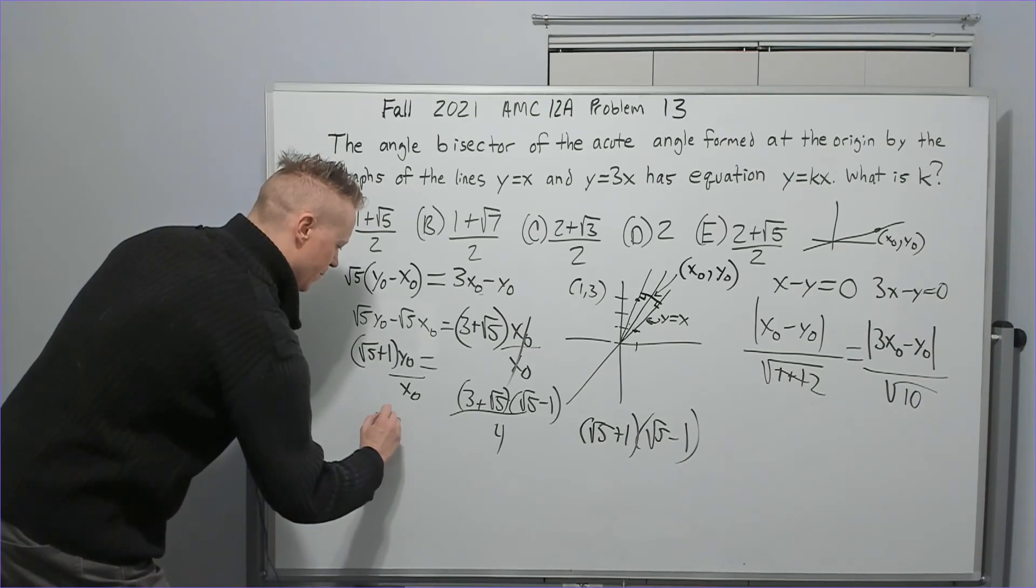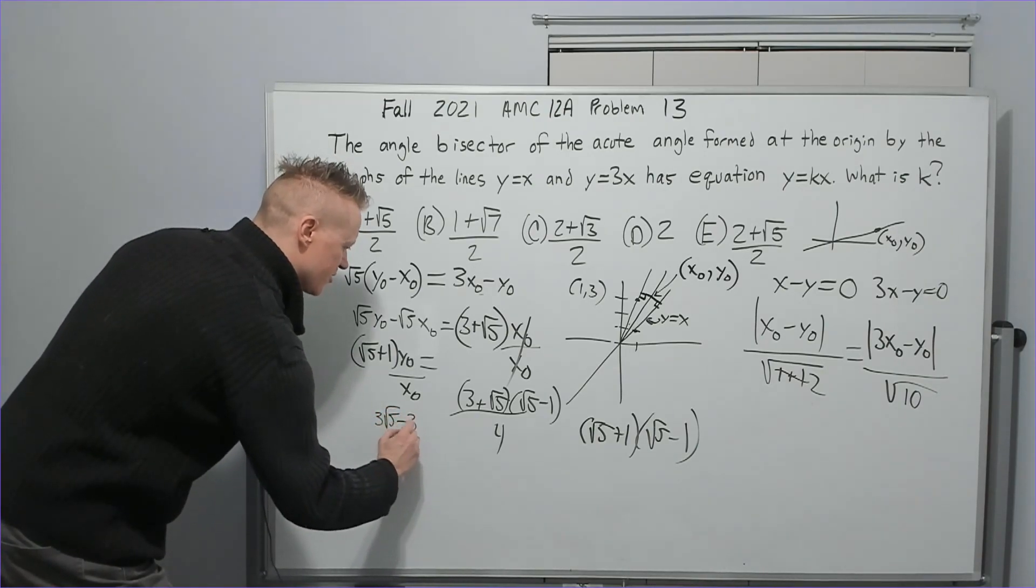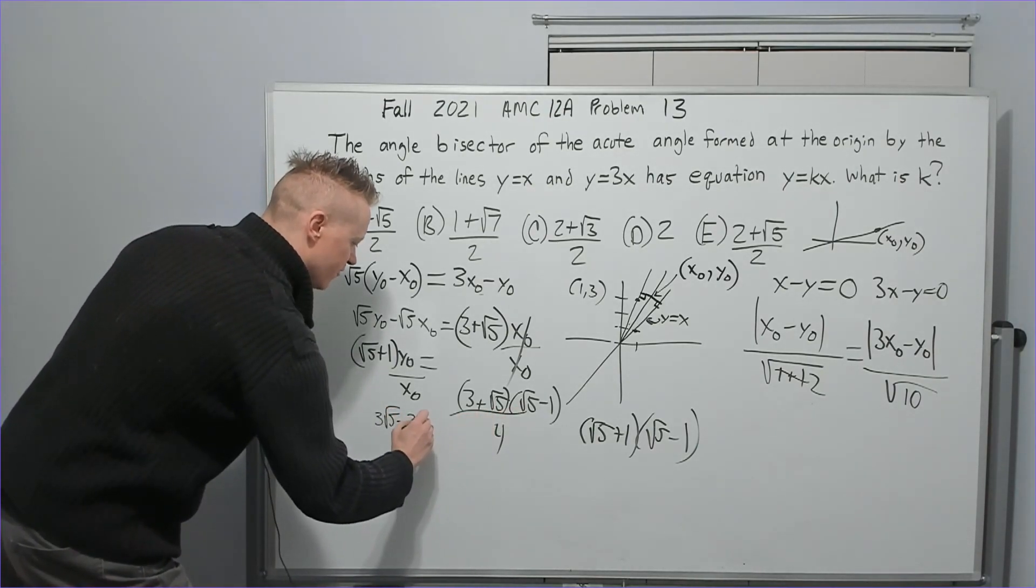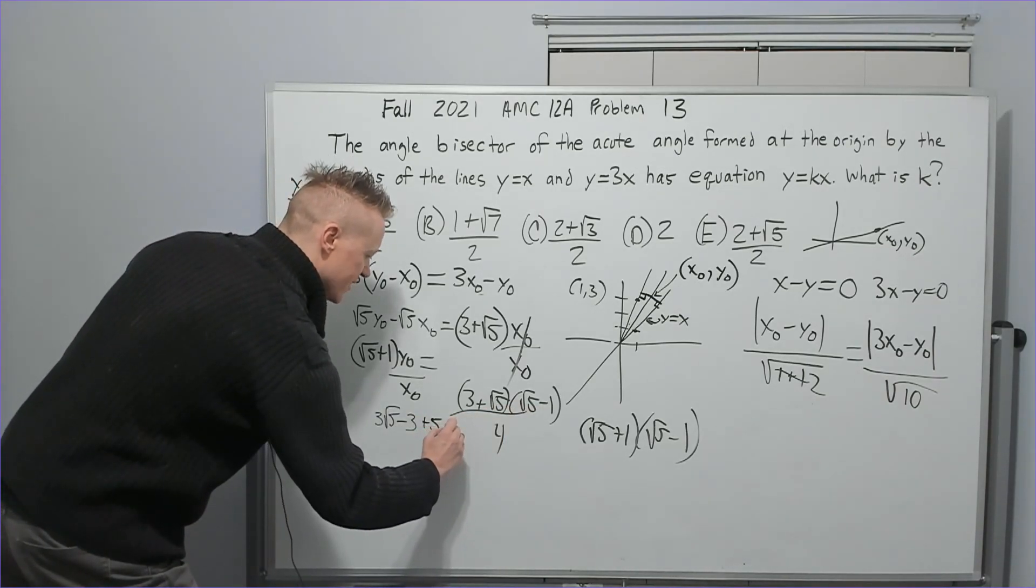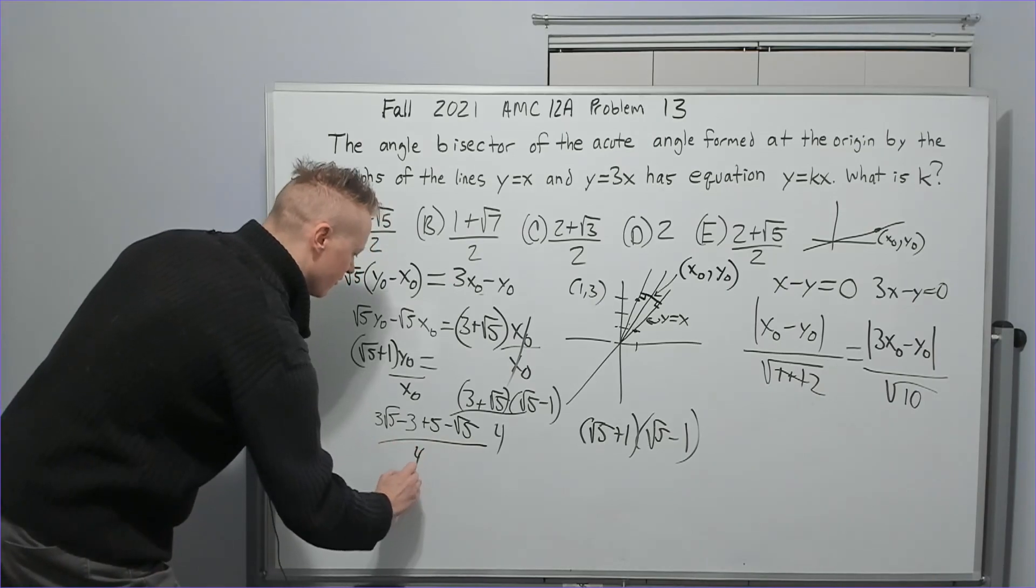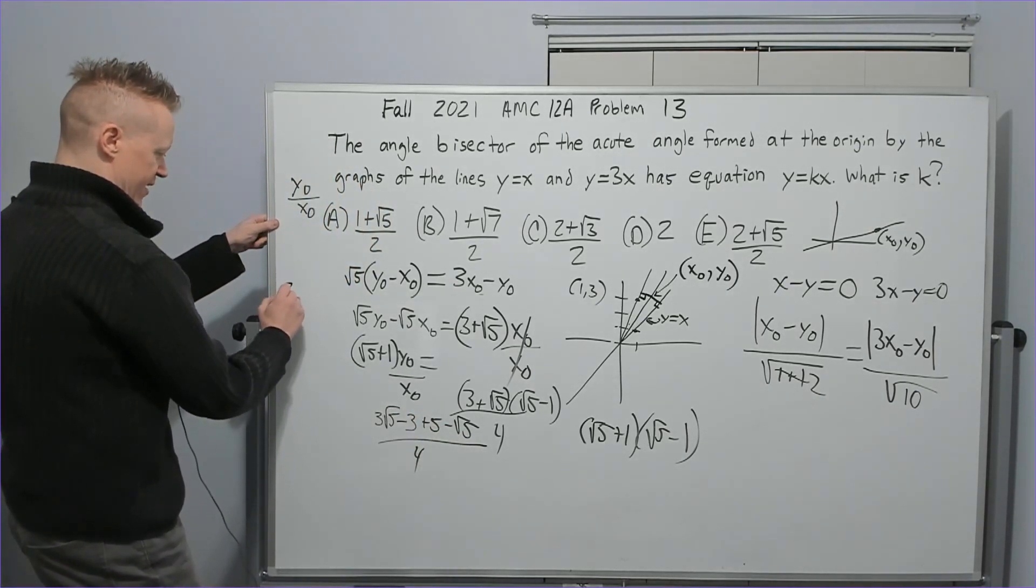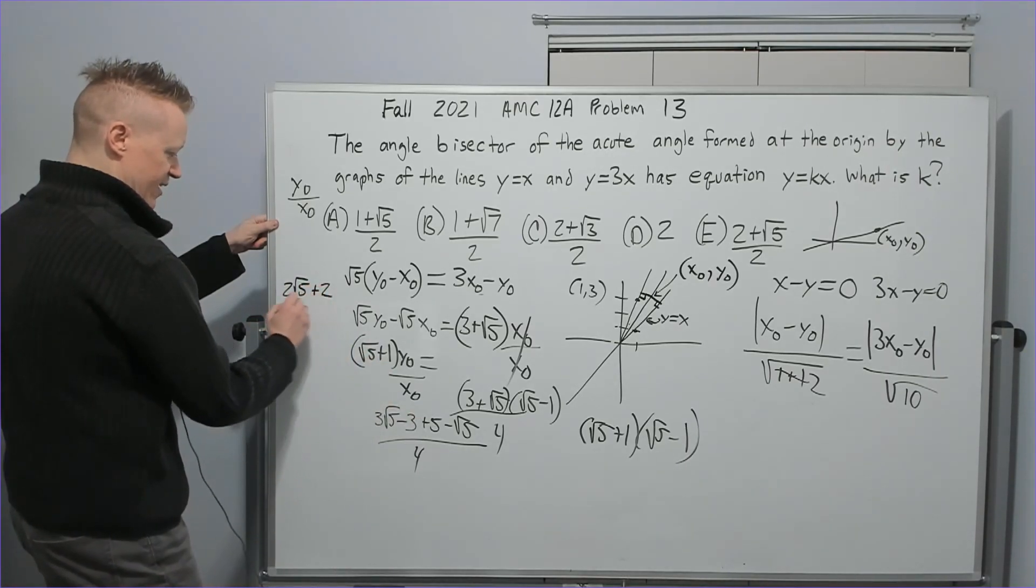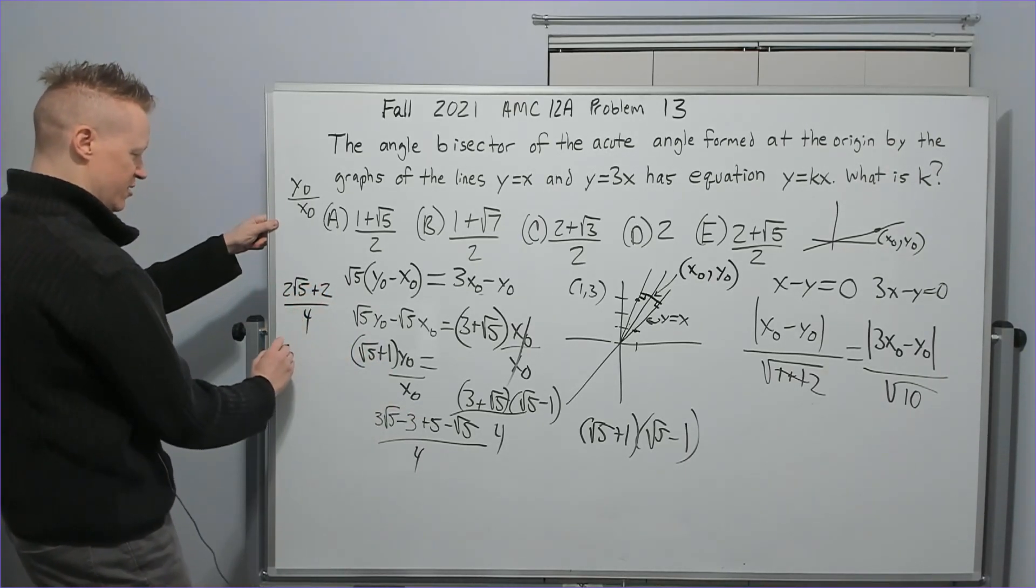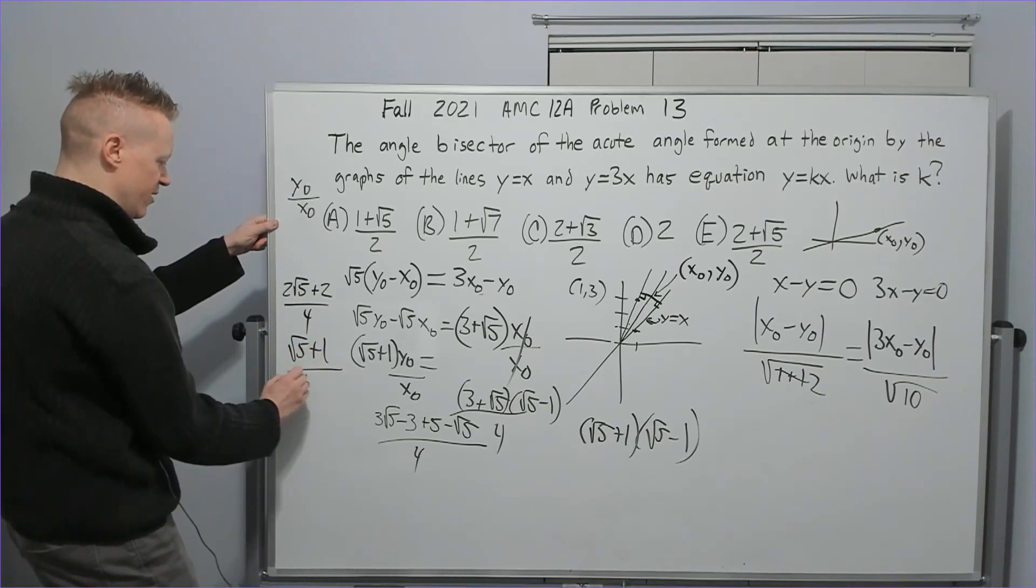3 root 5 minus 3. Root 5 times 5. Root 5 is plus 5. Root 5 times negative 1 is negative root 5 over 4. 3 root 5 minus root 5. I'm going to write it here. 2 root 5. Negative 3 plus 5 is 2 over 4. Cancel the 2. Get root 5 plus 1 over 2. Hey, do you know what that is?